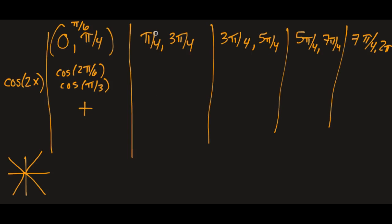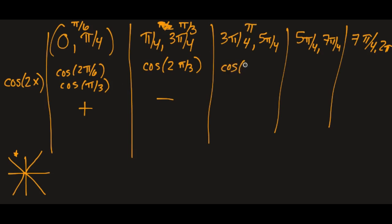For the interval pi over 4 to 3 pi over 4, let's test pi over 3: cosine of 2 times pi over 3 lands in a quadrant where it's negative. For 3 pi over 4 to 5 pi over 4, testing pi: cosine of 2 times pi equals cosine of 2 pi, which equals 1 — positive. Note that these don't always alternate, so you do want to keep testing. For 5 pi over 4 to 7 pi over 4, testing 4 pi over 3: cosine of 8 pi over 3 is negative.